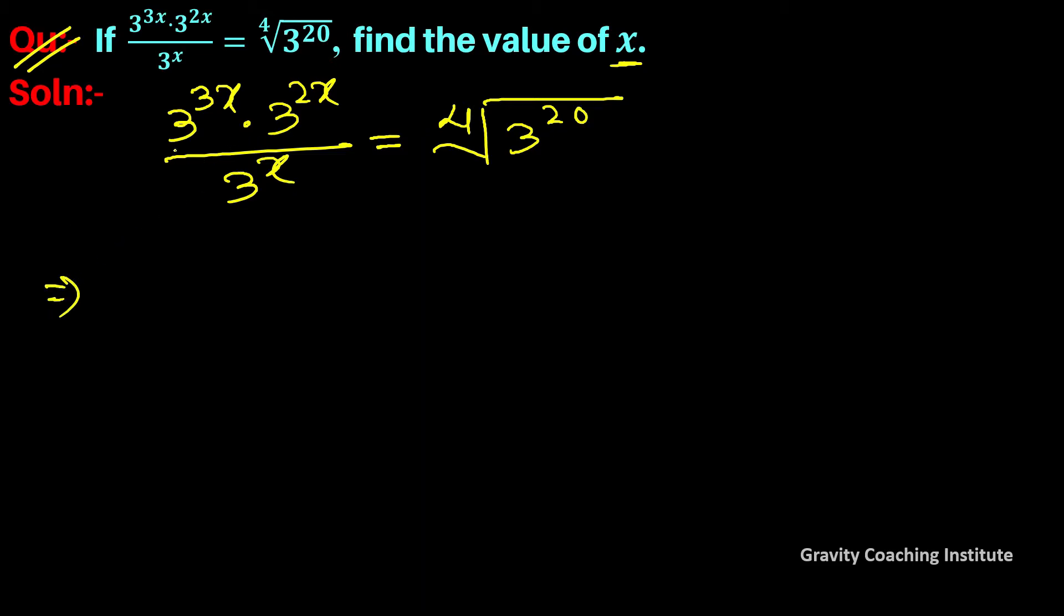First, we will add the powers: 3 to the power 3x plus 2x upon 3 to the power x equals 4th root.